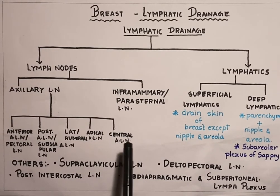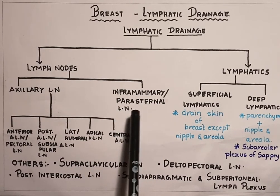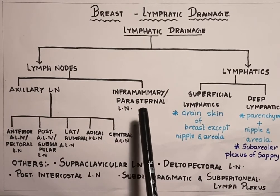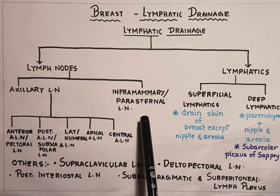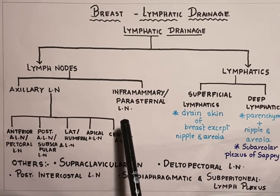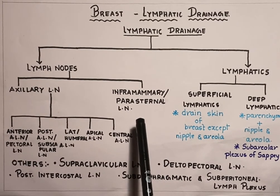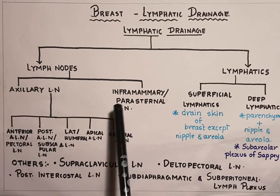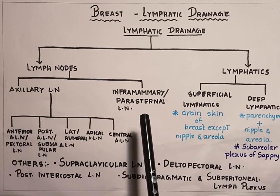Now coming to the inframammary or parasternal group of lymph nodes. As the name suggests, these are situated inferior to the mammary region on either side of the sternum — hence the name inframammary and parasternal, with parasternal meaning on either side of the sternum.